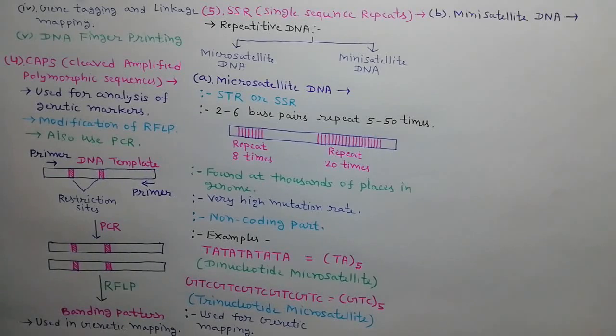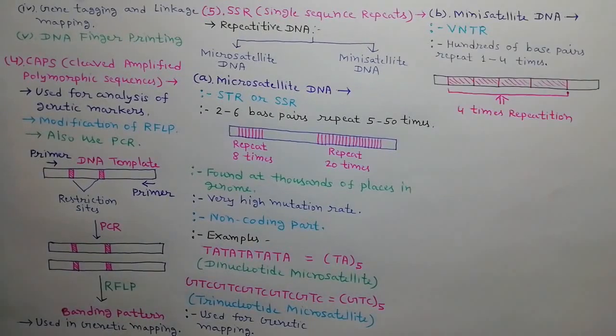Secondly, we will discuss about the minisatellite DNA. Minisatellite DNA is also called as VNTR means variable number of tandem repeats. Here, repeat unit contains hundreds of base pairs which repeats 1 to 4 times as shown in the diagram.